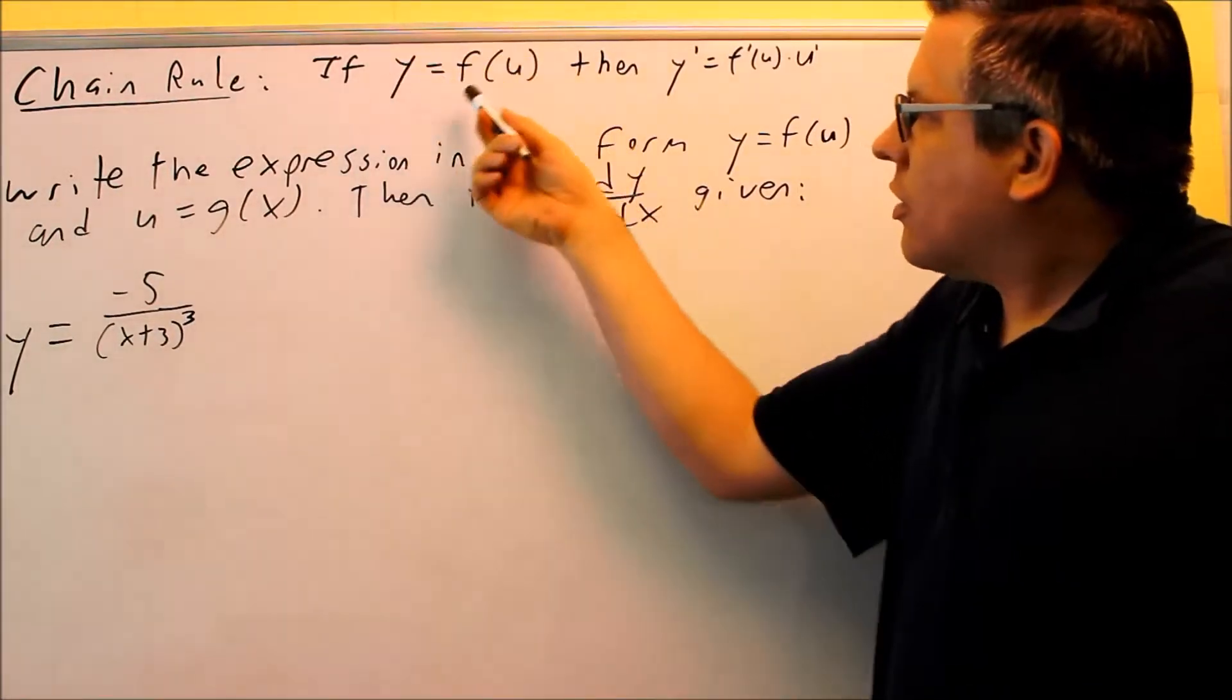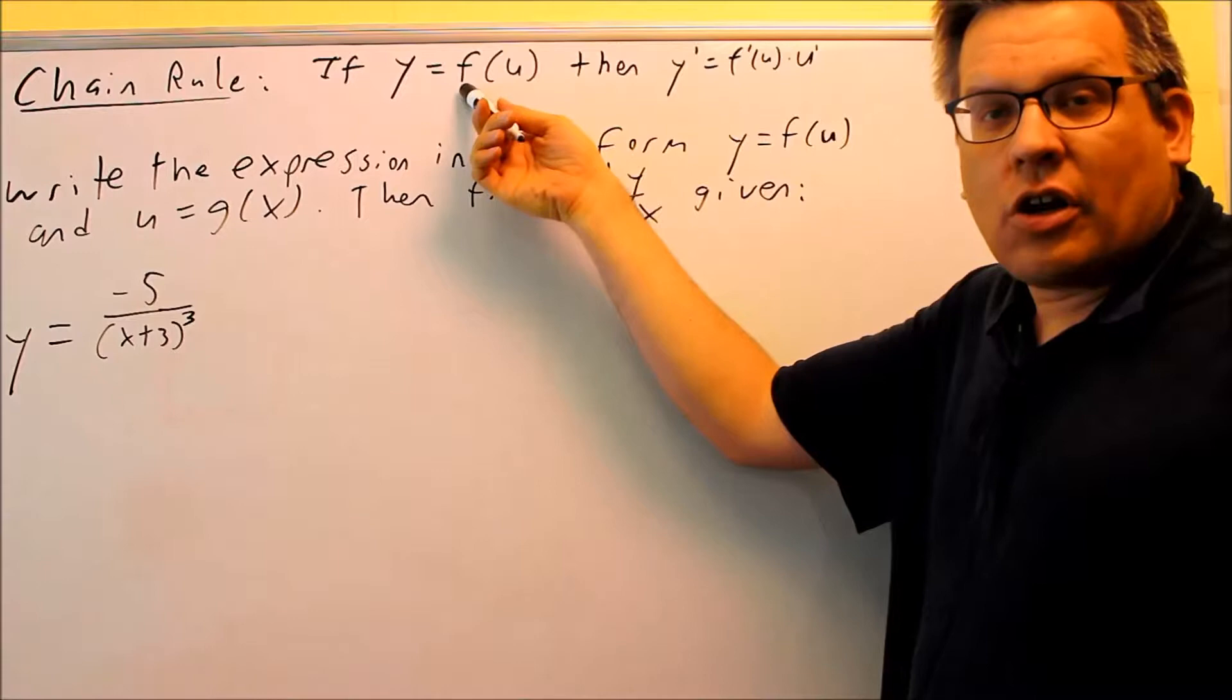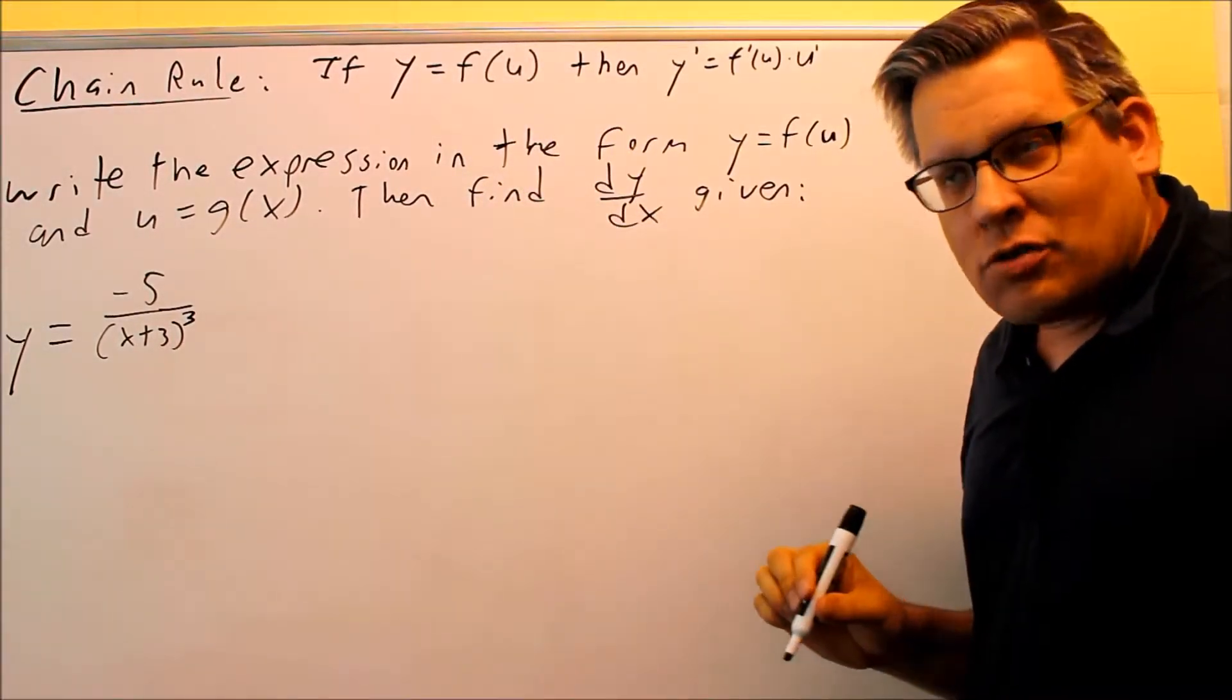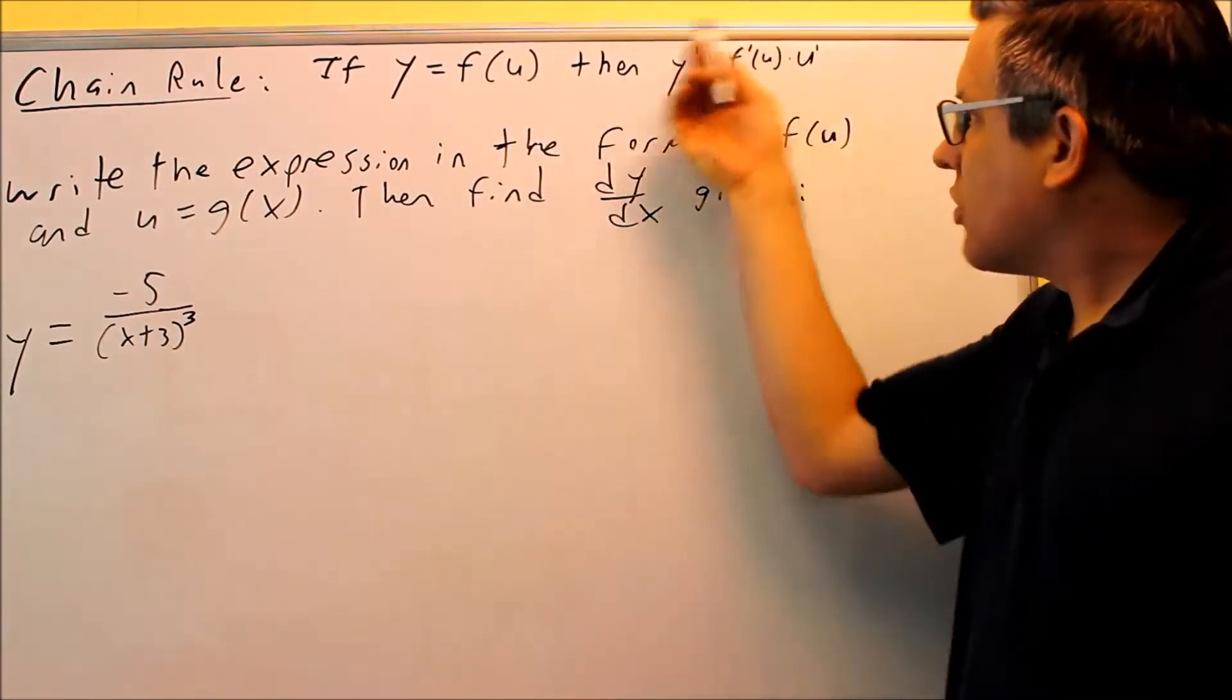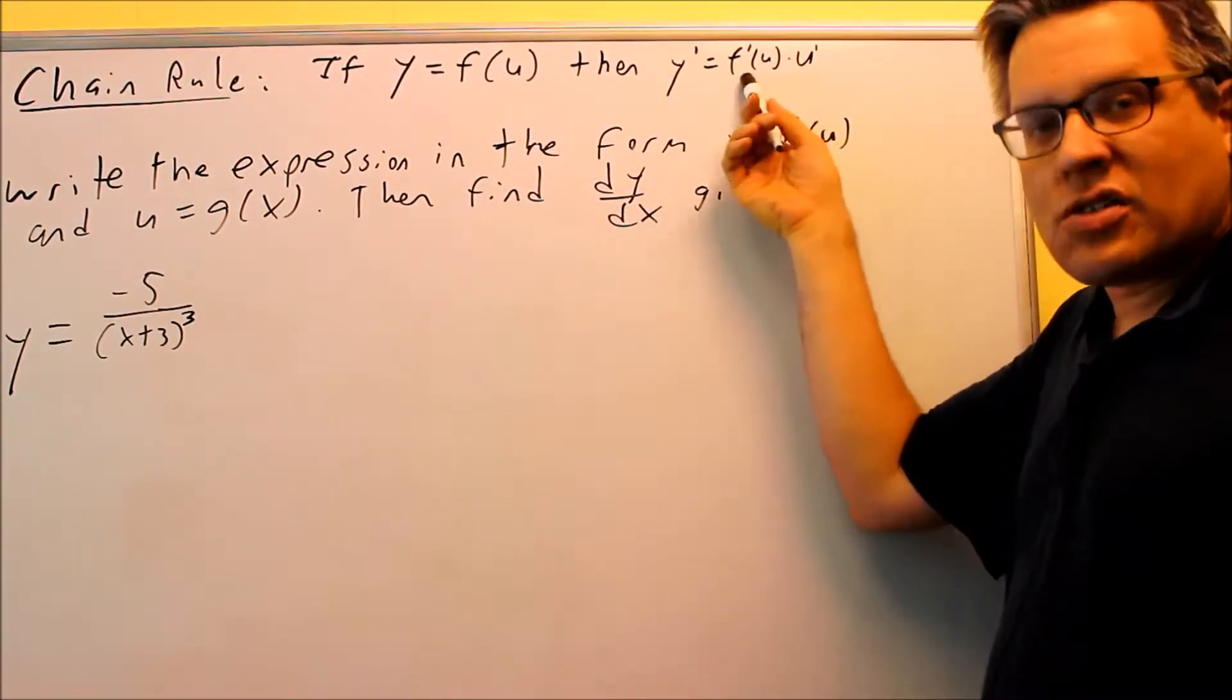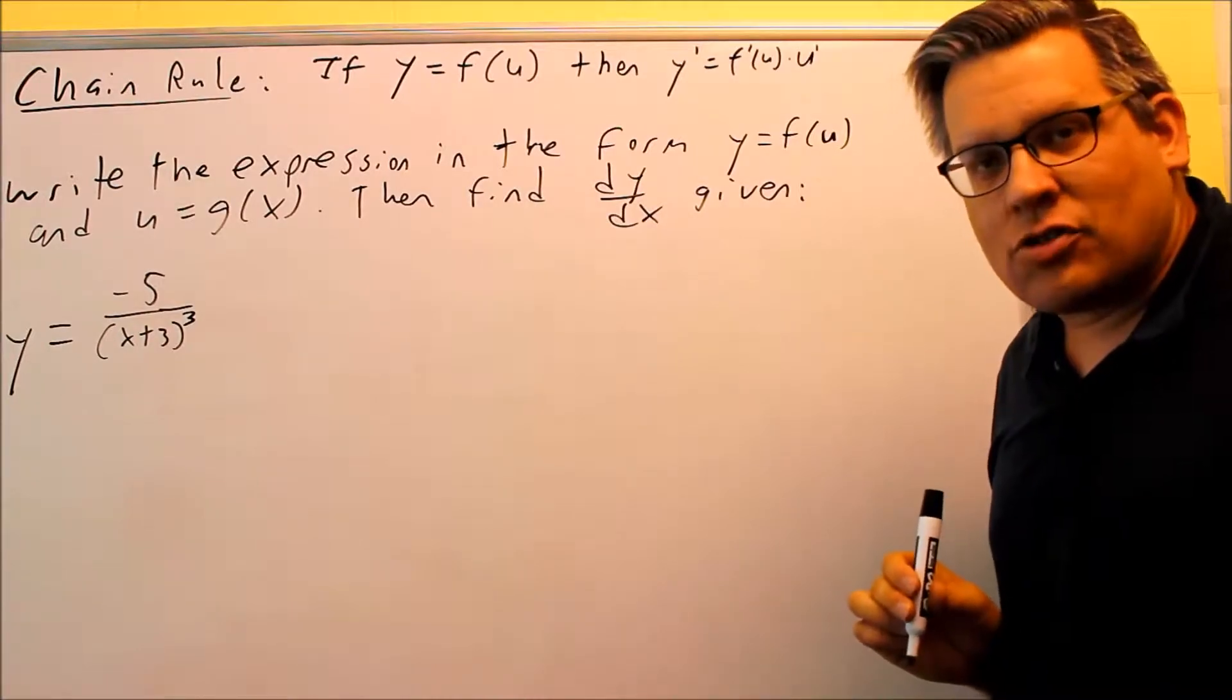That's what we have right here. So if we're given something like that, f is going to be considered an outside function and you have a u to be considered the inside function. So if you want to take the derivative of something like that, here is the formula that you're going to use. The derivative of y is equal to the derivative of the outside function and then multiply by the derivative of the inside function.